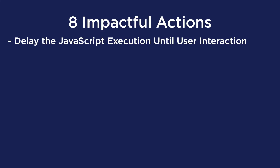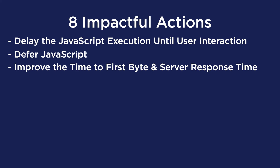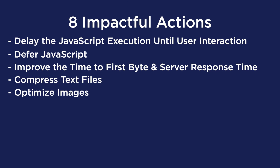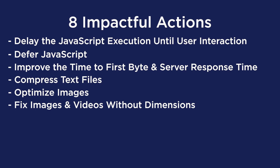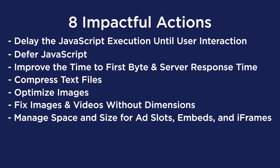So there you have it — the 8 most impactful actions to optimize your Core Web Vitals: delay JavaScript execution time until user interaction, defer JavaScript, improve time to first byte and reduce server response time, compress text files, optimize images, fix images and videos without dimensions, manage space and size for ad slots, embeds, and iframes, and manage dynamic content.